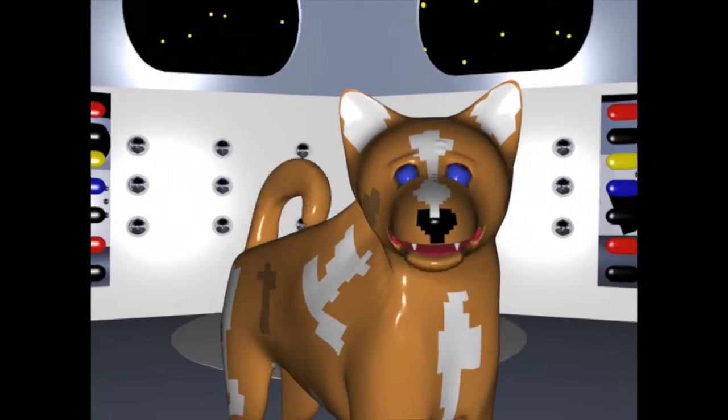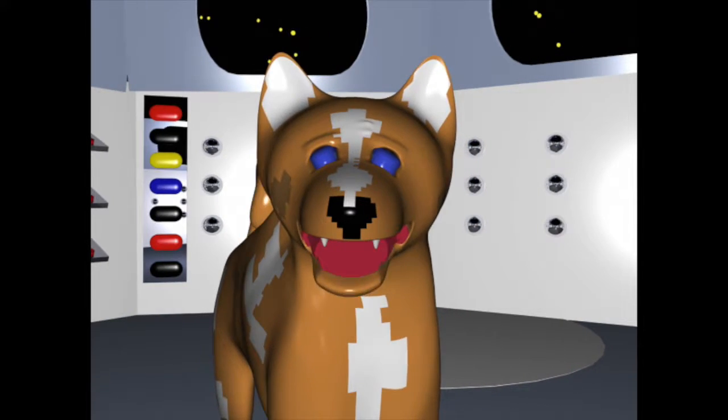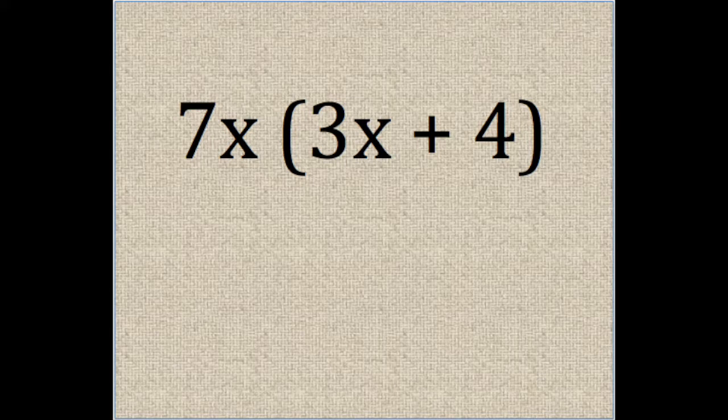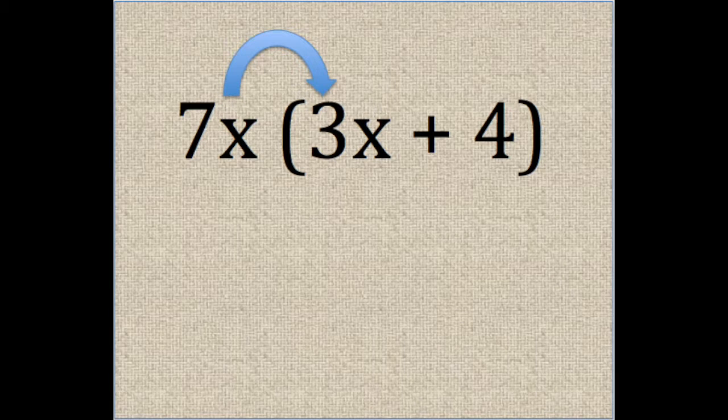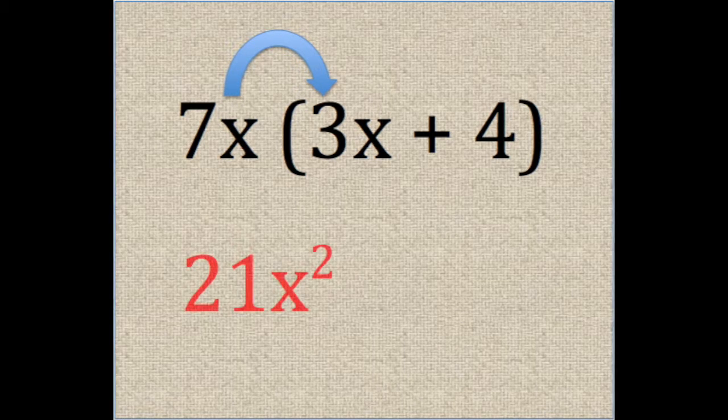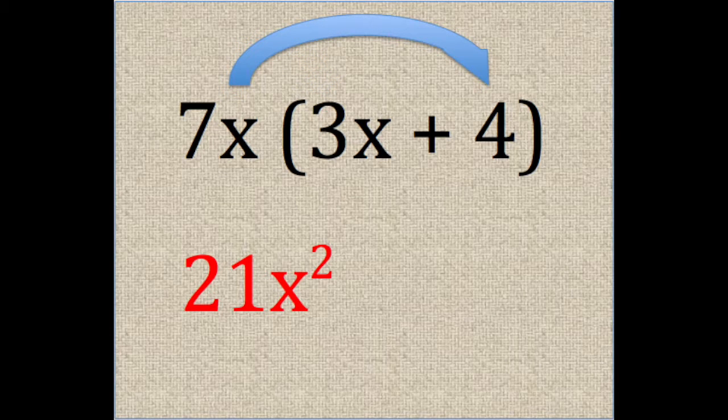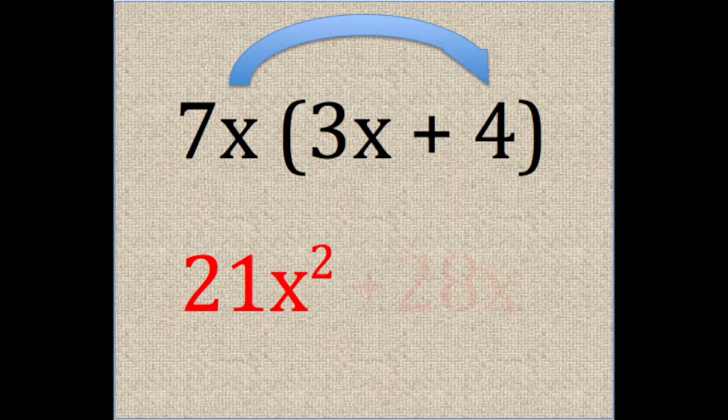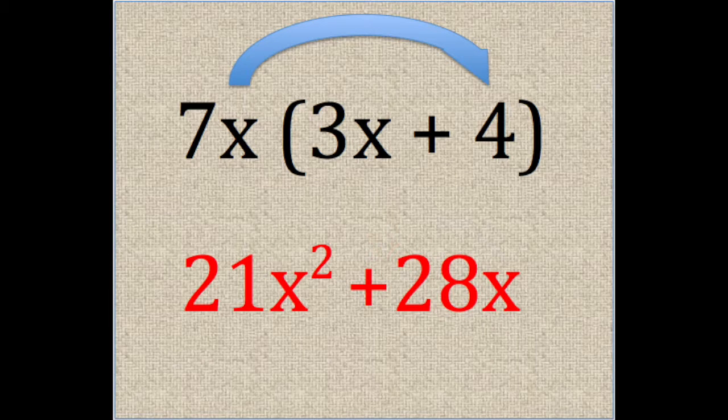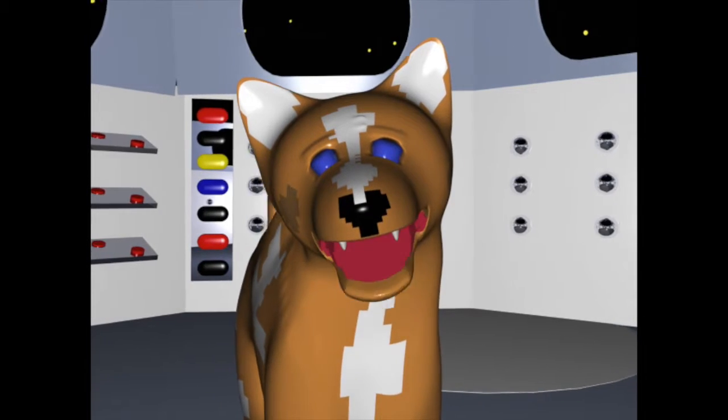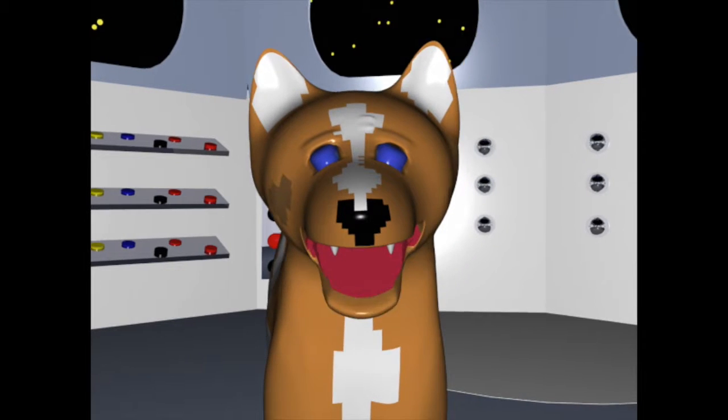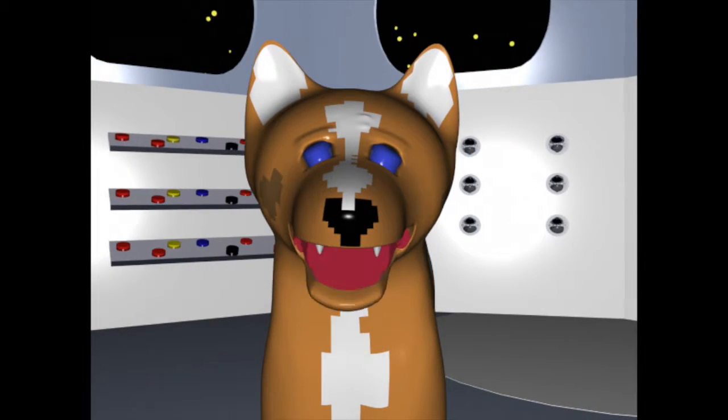Let's take a minute to review the distributive property. Remember that when we see a problem like this, we use the distributive property to distribute the 7x to the 3x, giving us 21x squared, and we also distribute the 7x to the 4, giving us 28x. So when we multiply two polynomials, we are using the distributive property.